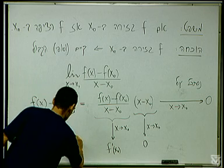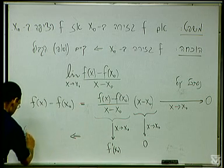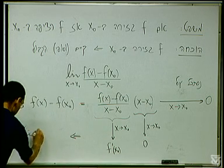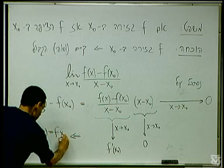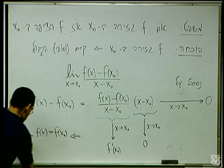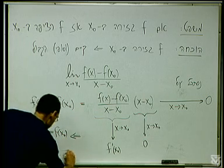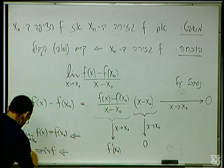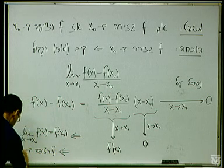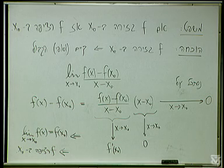כלומר, הגבול של f(x) פחות f(x0) הוא 0 כש-x שואף ל-x0. כלומר, הגבול של f(x) הוא f(x0) - זה ההגדרה של רציפות. כלומר, f רציפה ב-x0 לפי הגדרה.